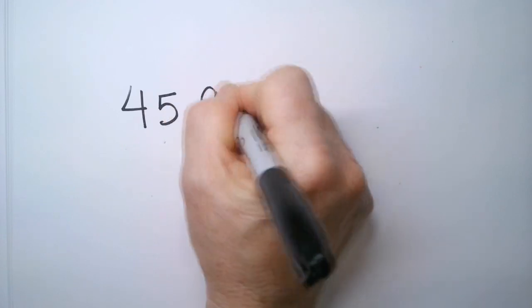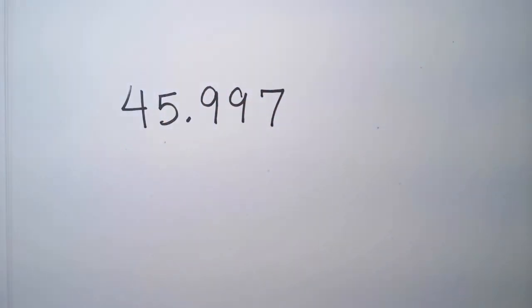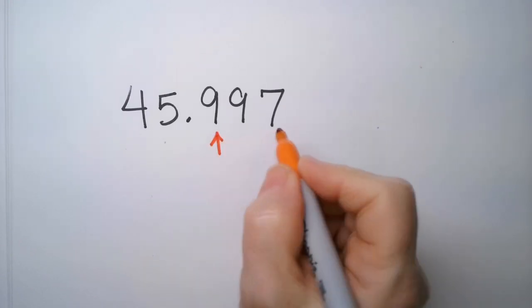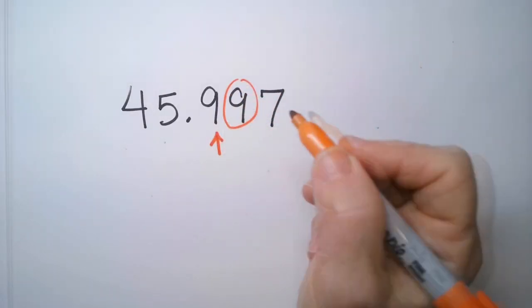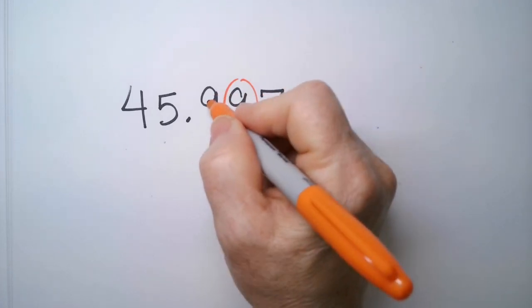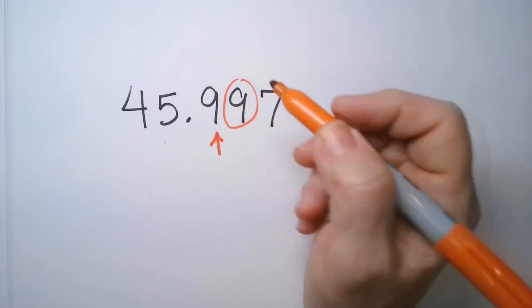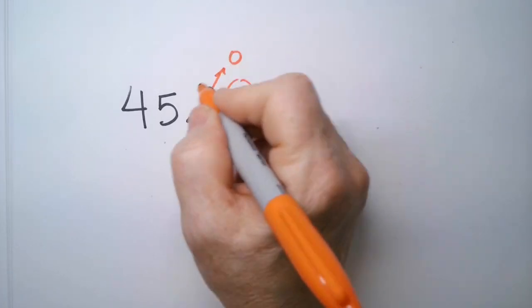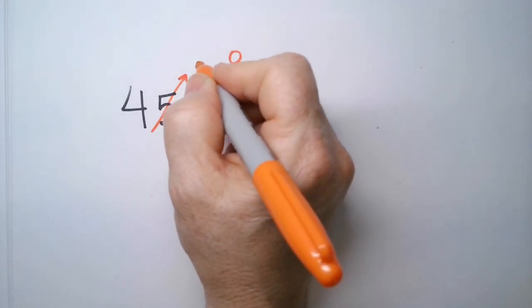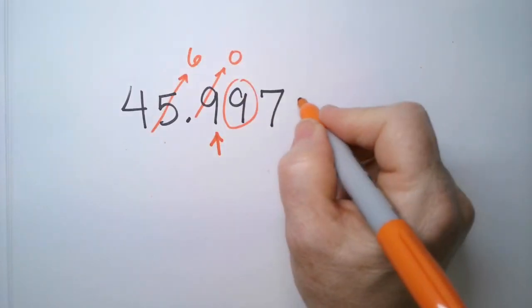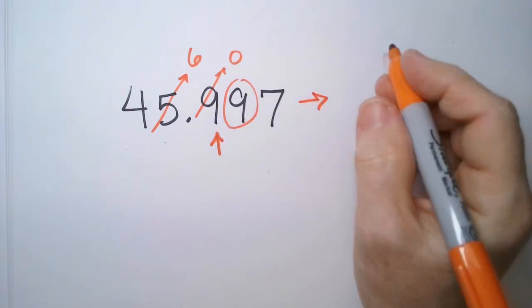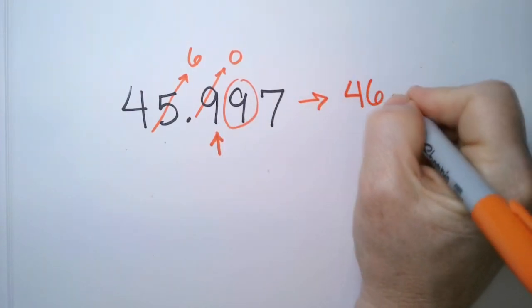45.997. I want to round that to the nearest tenth. My tenth is here. This is a 9, clearly above 5. So this is going to round up, but when I round up, what's above a 9? This actually will become a 0, and then you have to bump this one up as well. So that would become a 6. So this one, rounded to the nearest tenth, is 46.0.